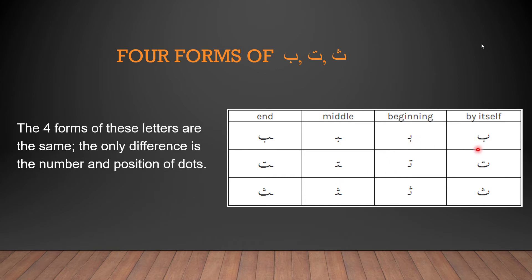Ba has one dot below itself, and that is seen in every single version of it. Ta has two dots above it, also seen in all four forms. The only difference between Ba, Ta, and Sa are the dots: Ba has one dot below, Ta has two dots above, and Sa has three dots above.